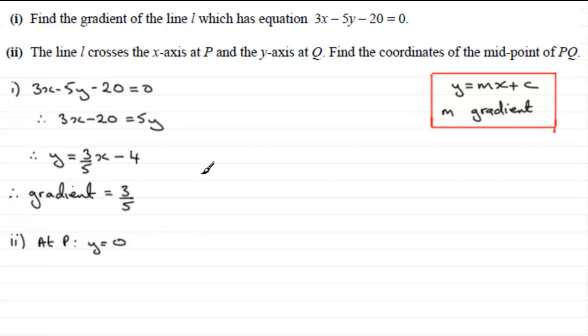So therefore 3x minus 20 equals 0. And if we rearrange this for x, therefore 3x must equal 20 if we add 20 to both sides. And if I divide both sides by 3, x must be equal to 20 over 3, 20 thirds. And I'll leave it like that rather than representing it as a mixed fraction.